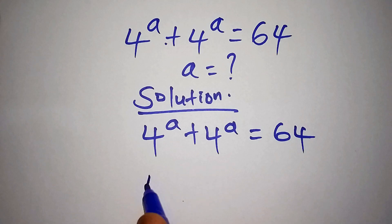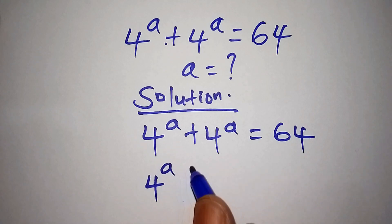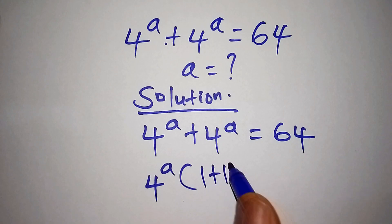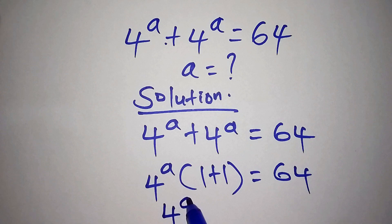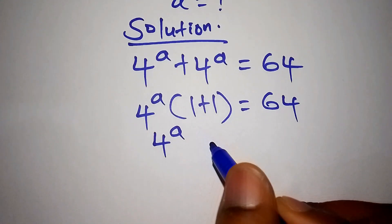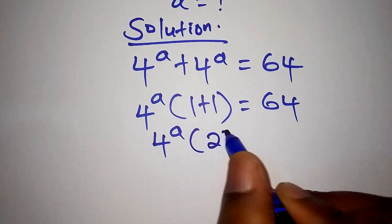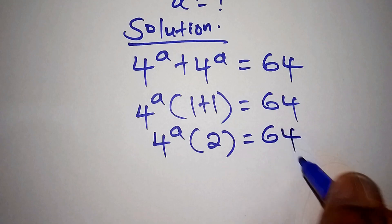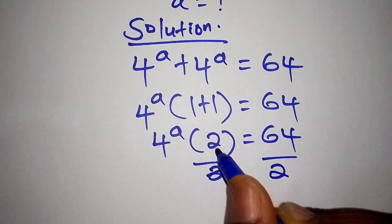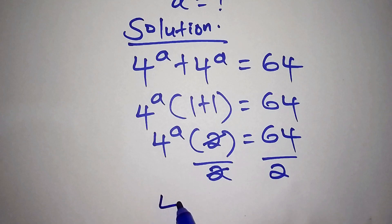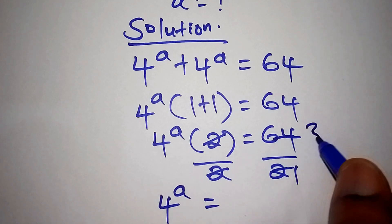The first thing we need to do is to factorize it. So now we shall have 4 to the power of a, into bracket 1 plus 1, is equals to 64. We work out the number inside the bracket: 1 plus 1 is 2. So 4 to the power of a times 2 equals 64. Then divide both sides by 2, so that 2 by 2cancels, giving us 4 to the power of a is equals to 32.